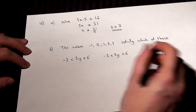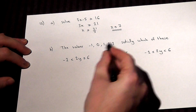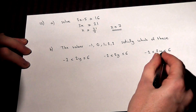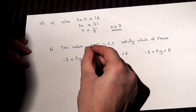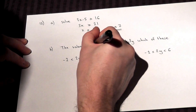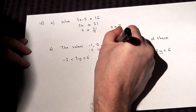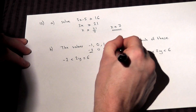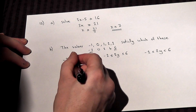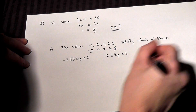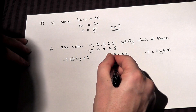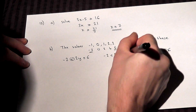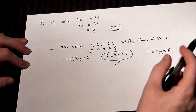In part b, we're asked what do these values satisfy — this one, that one, or that one? Now this has got a 2y in it. So if we double our values, we have minus 2, 0, 2, 4, and 6. So our values include minus 2 and include 6. Now this one does not include minus 2. This one does not include 6. But this one includes minus 2 and includes 6. So these values satisfy this inequality, so it is that expression there.